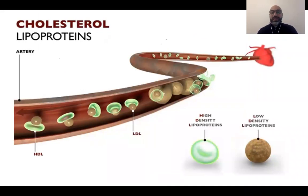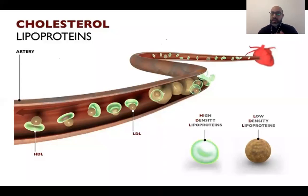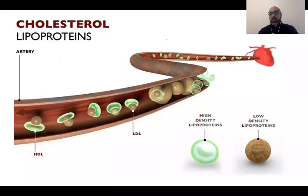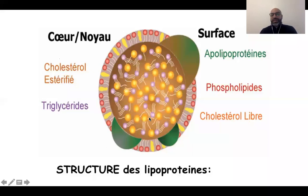Le cholestérol est hydrophobe, il ne peut pas circuler seul dans le sang. Pour le transférer vers les cellules en périphérie — pour la construction cellulaire — il faut des structures hydrophiles appelées lipoprotéines. Ces lipoprotéines, véritables « soucoupes volantes », ont un centre hydrophobe riche en cholestérol estérifié et en triglycérides, et une périphérie hydrophile riche en phospholipides et en apolipoprotéines.